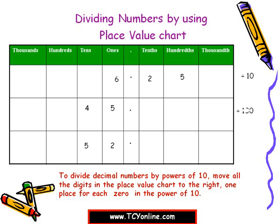We get the answer 6.25. Next, dividing 45 by 100: move each digit two places to the right — 4 at tens moves to tenths place and 5 at ones moves to hundredths place, giving us 0.45. Finally, dividing 52 by 1000: move each digit three places to the right — 5 at tens moves to hundredths place and 2 at ones moves to thousandths place, giving us 0.052.